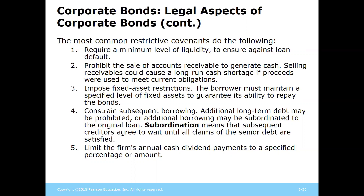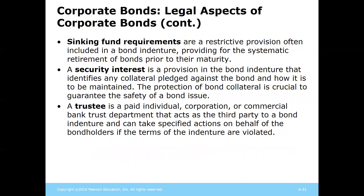Covenants might require keeping certain amounts of fixed assets on hand so companies can't sell assets to repay things. They can prevent borrowing too much other money or subordinating debt on the original loan — meaning any loans taken out after bonds are sold would have to be repaid after the bonds. They can also prevent giving extravagant dividends to shareholders before bonds are repaid. Some covenants include a sinking fund, requiring cash to be set aside or certain bonds retired at certain points in time.